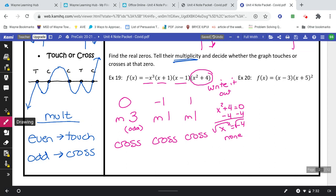Try example number 20. I'll give you just a moment. You should have three multiplicity of one cross, you should have three multiplicity of one cross, and a negative five multiplicity of two touch.